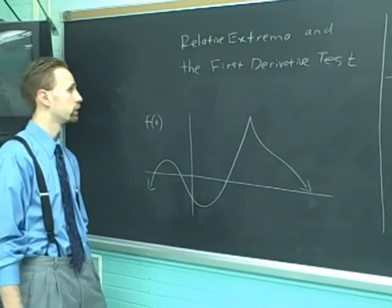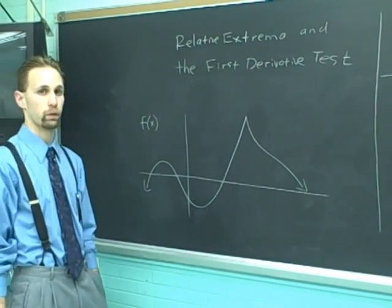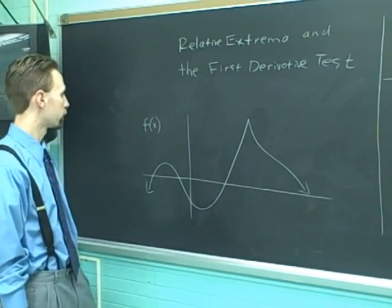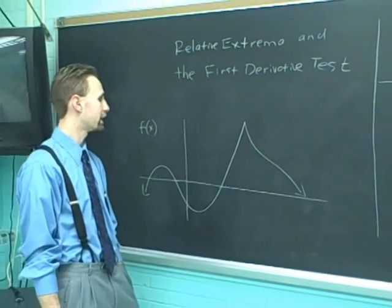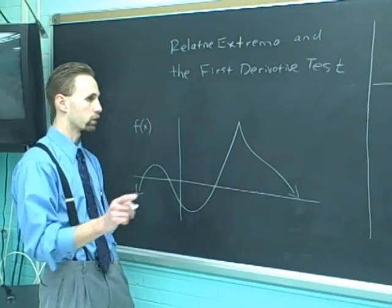Locating relative extrema is something that we need to know how to do when we're graphing functions. For that, we use the first derivative test, which I'll get to in a second, but first we need a definition: a critical number.